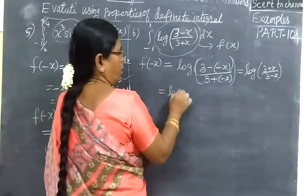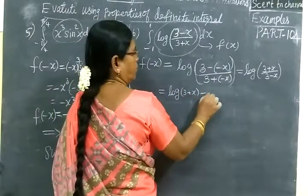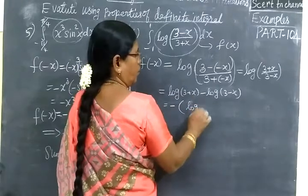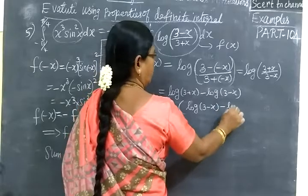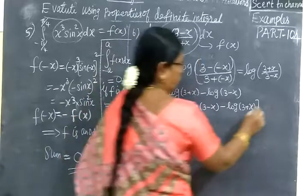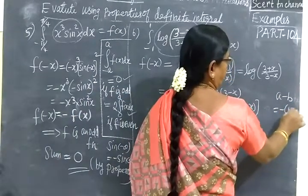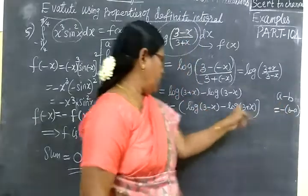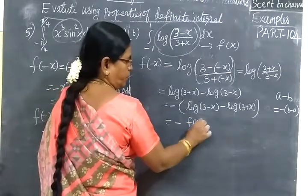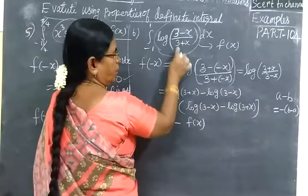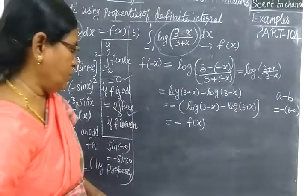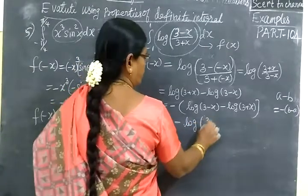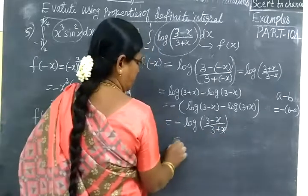Log m by n is log m minus log n. Log of numerator minus log of denominator. This can be written as minus of a reversal: log of 3 minus s minus log of 3 plus s. A minus b can be written as minus of b minus a.